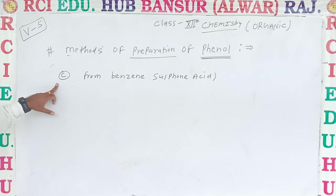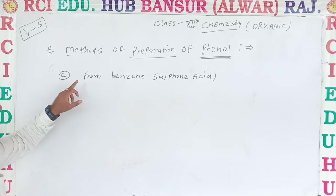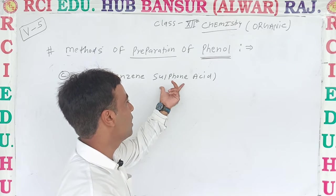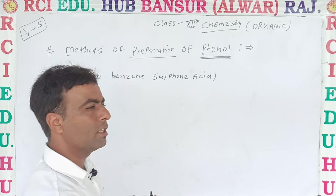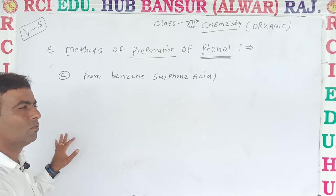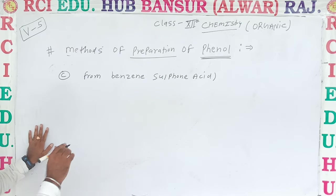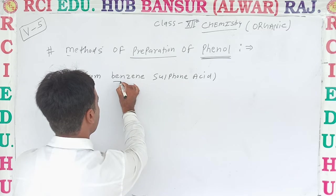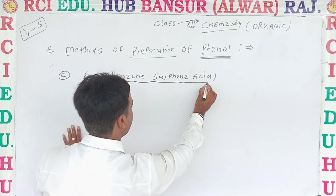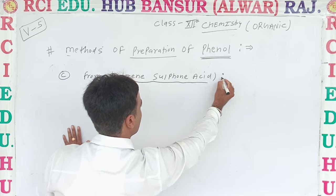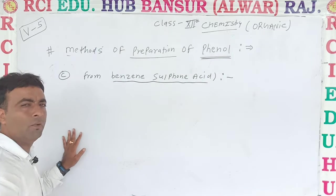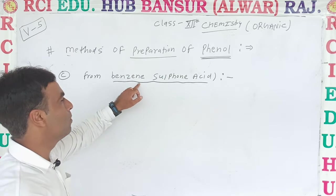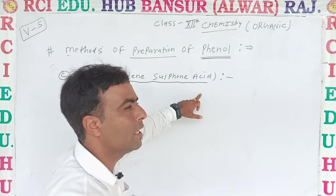Now the third reaction is from benzene sulfonic acid. We have to form phenol from benzene sulfonic acid. First of all, you need to write the structure of benzene sulfonic acid.